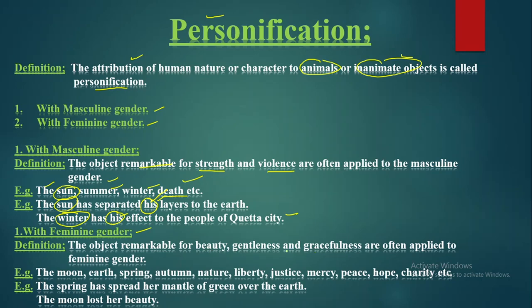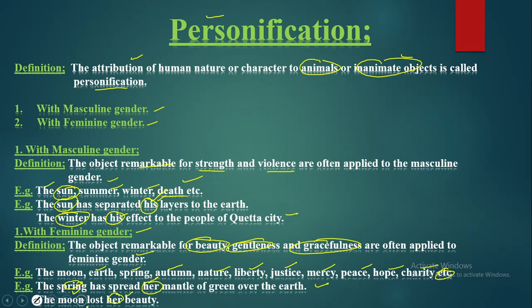With feminine gender in personification: objects remarkable for beauty, gentleness, and gracefulness are often given the feminine gender. Examples include: the moon, the earth, spring, autumn, nature, liberty, justice, mercy, peace, hope, and charity — these all belong to the feminine gender. For example: 'The spring spread her mantle of green over the earth' — 'her' gives spring a feminine gender. 'The moon lost her beauty' — the moon is used for beauty and given feminine gender. Hope you got today's lecture. Best of luck — see you next time. Goodbye.